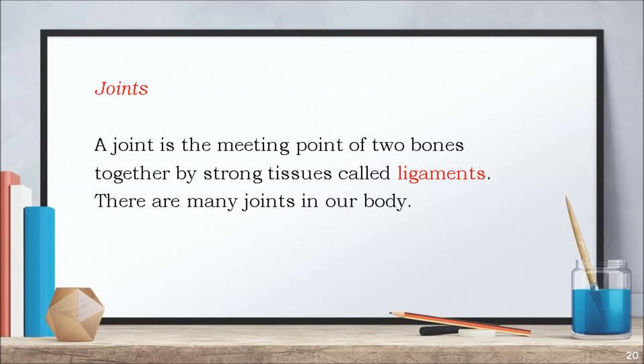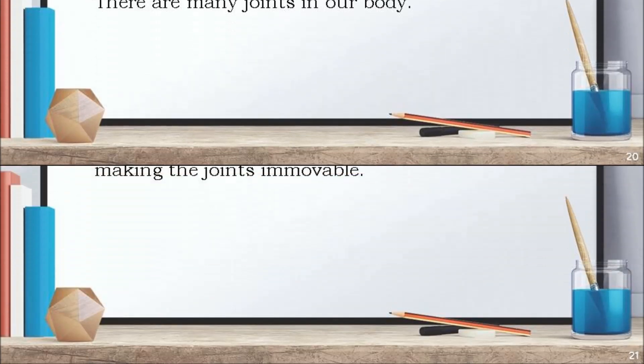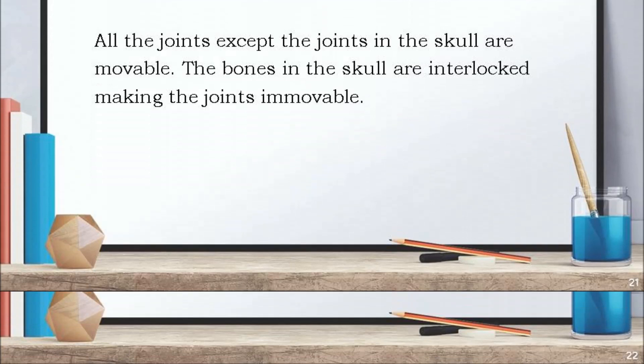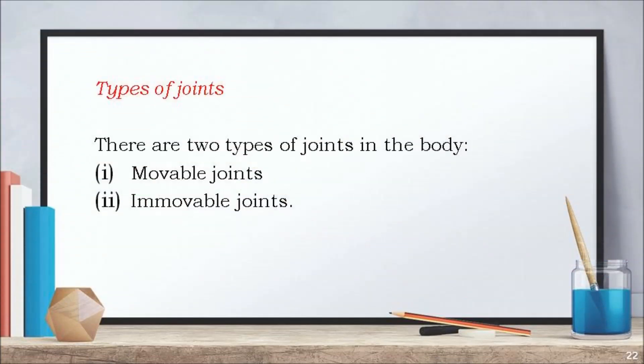A joint is the meeting point of two bones, held together by strong tissues called ligaments. There are many joints in our body. All the joints except the joints in the skull are movable. The bones in the skull are interlocked, making the joints immovable.